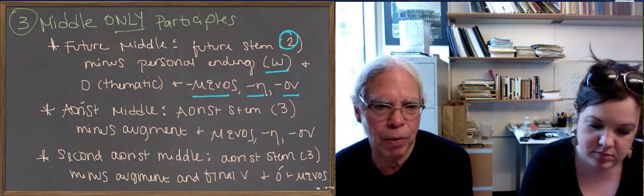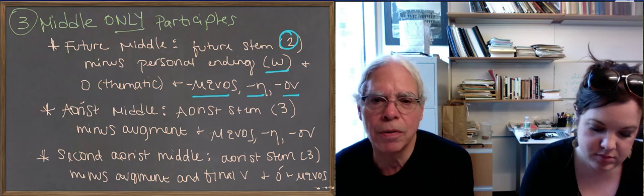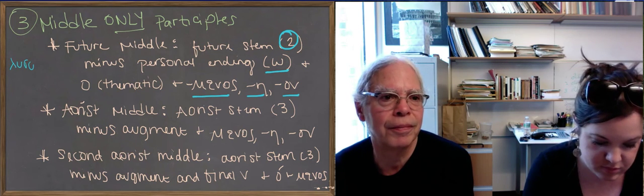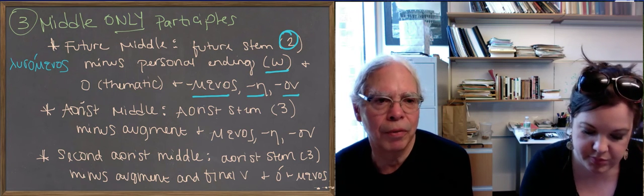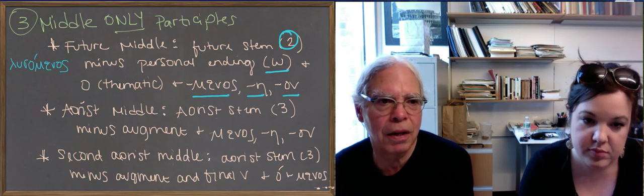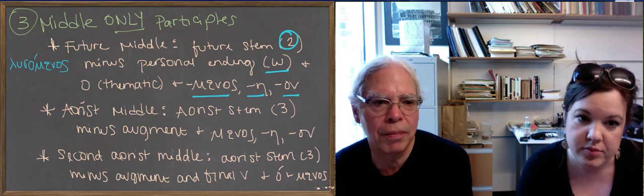So, for example, for luo, it's going to be lysamenos. So, lusō, you remove the omega, and it keeps the s, you get lysamenos.